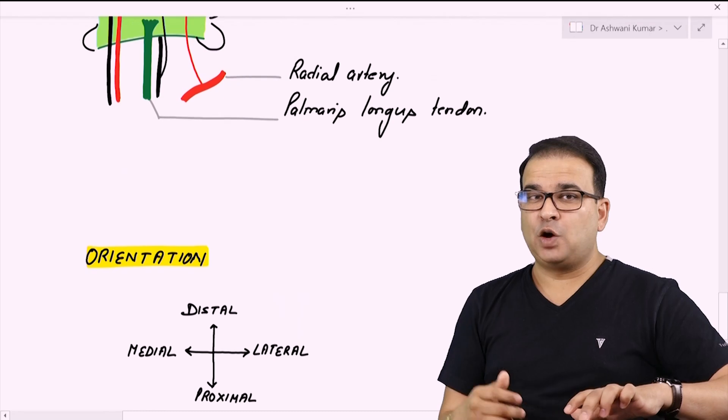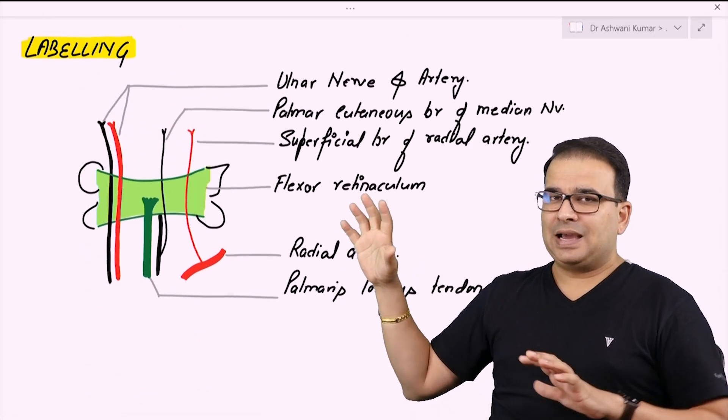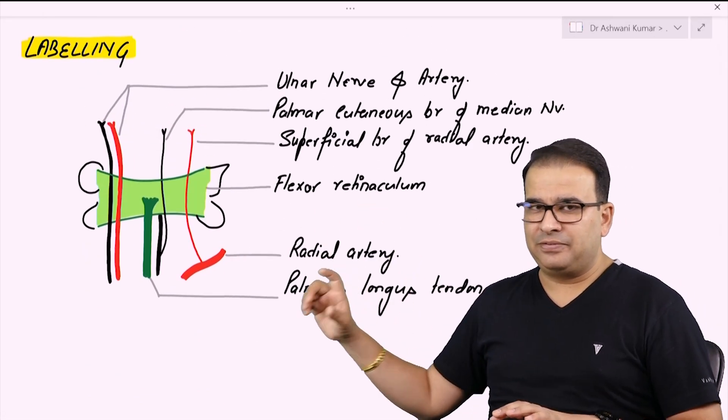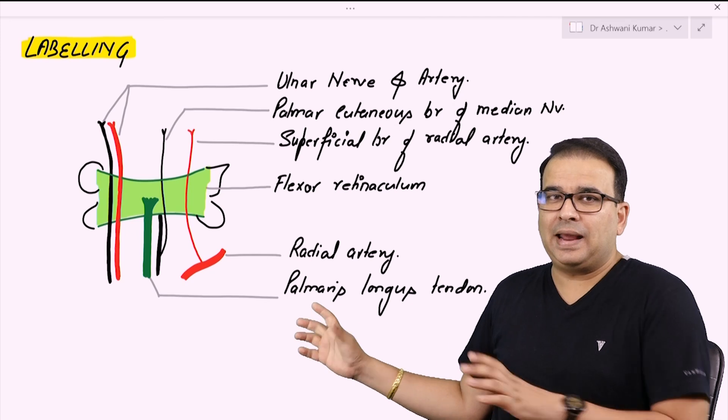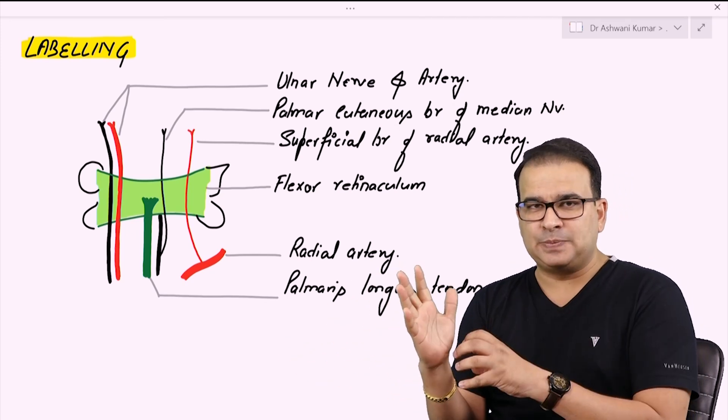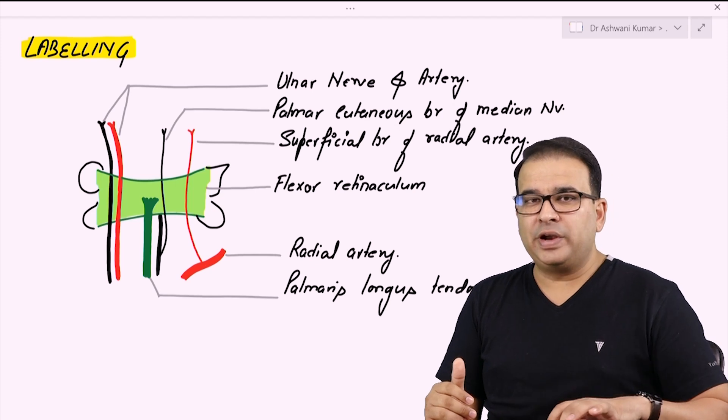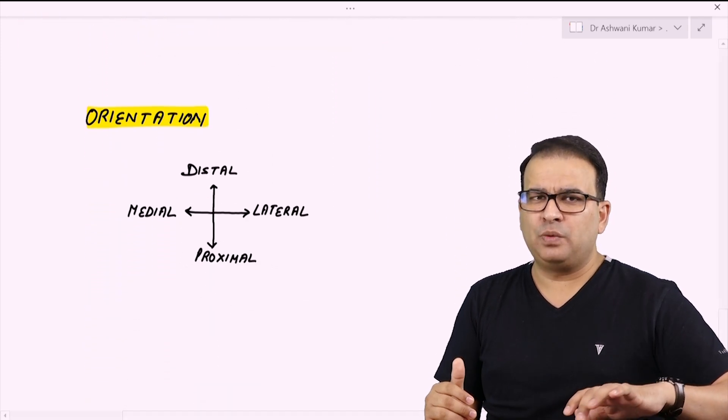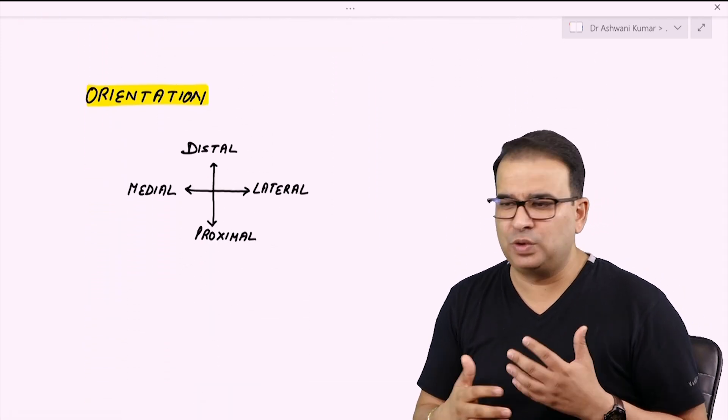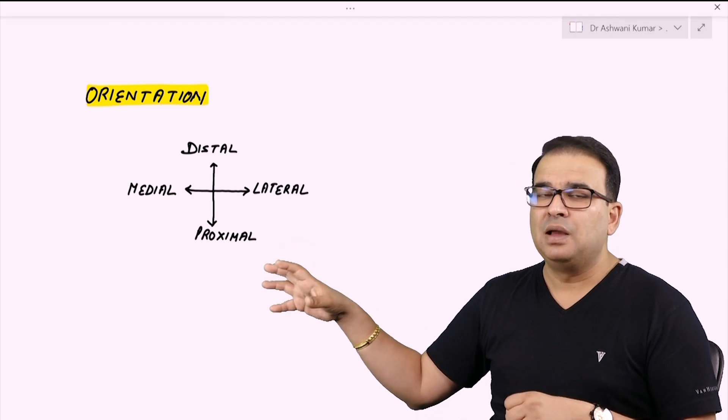Another thing is orientation. When I drew this diagram, this diagram is absolutely incomplete if I do not mention what and where it is. I have to tell you that this is the palmer aspect of the wrist or the carpal region. Orientation of the diagram is also very important, which I've seen that students usually don't draw.